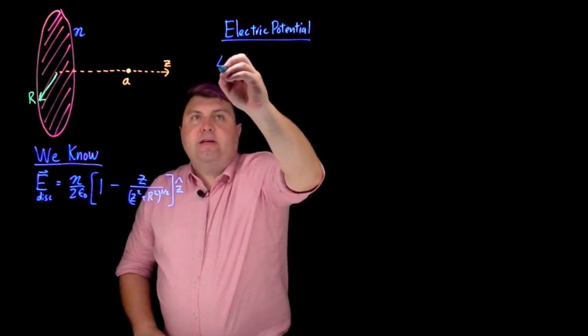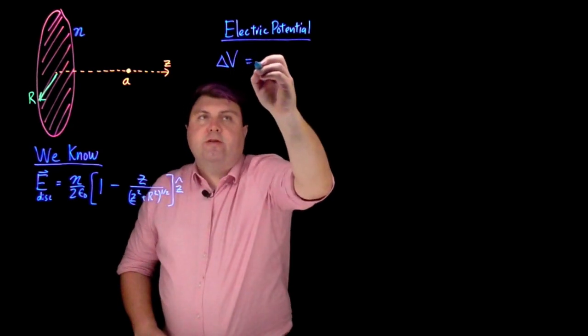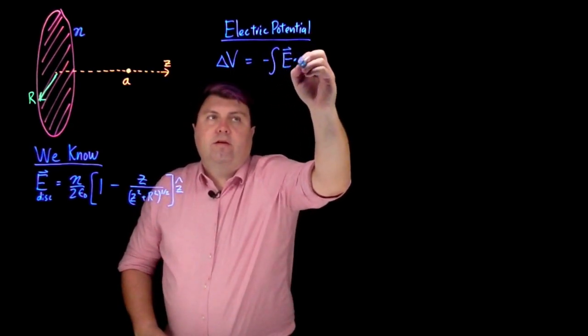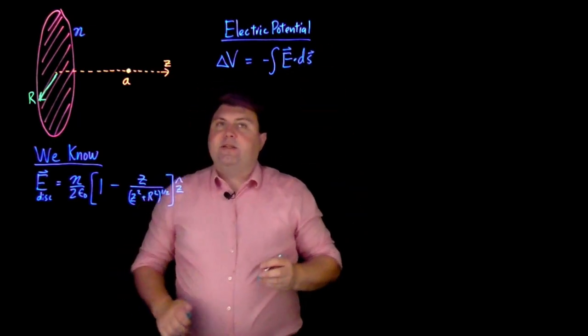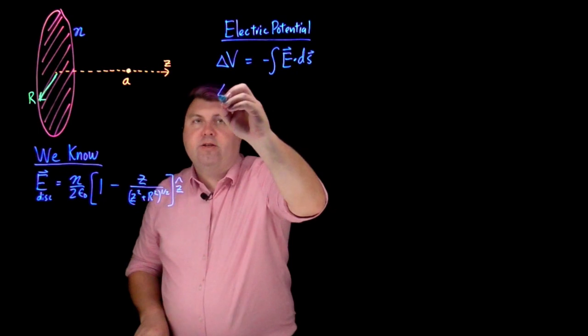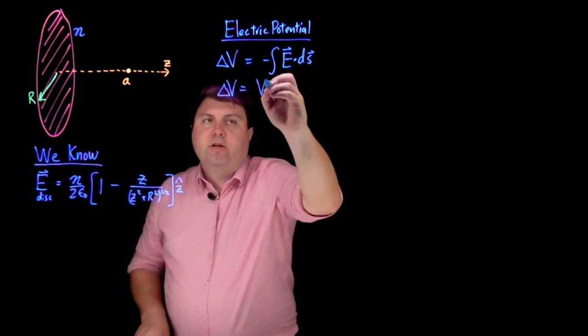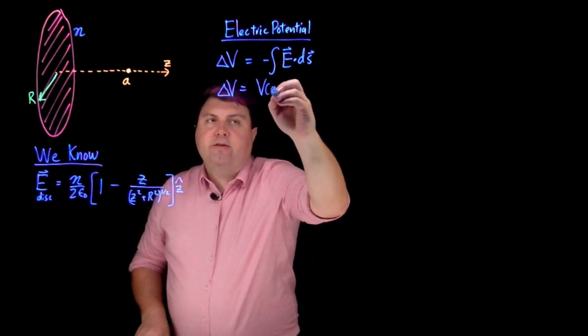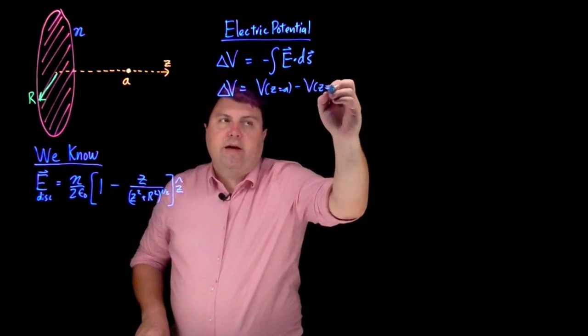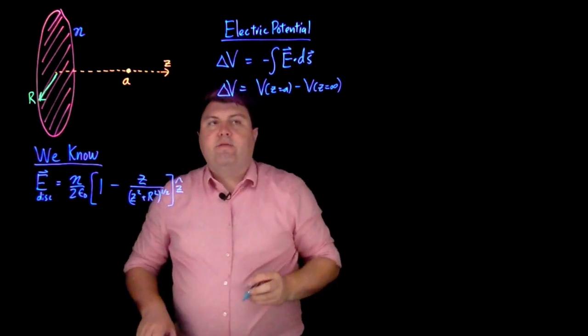Our definition of it is that the change in electric potential is equal to the negative path integral of E·ds. So what I can say is my change in electric potential would be the potential at z equals a minus the potential at z equals infinity.